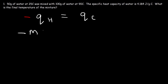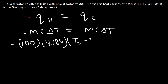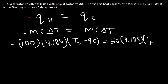So q is equal to mc delta T. On the left, the mass of the hot water sample is 100 grams, the specific heat capacity is 4.184, and the change in temperature is final minus initial — we don't know the final temperature, but the initial temperature of the hot water is 90. The mass of the cold water sample is 50, the specific heat capacity is the same, 4.184, and delta T is the final temperature minus the initial temperature of 25.